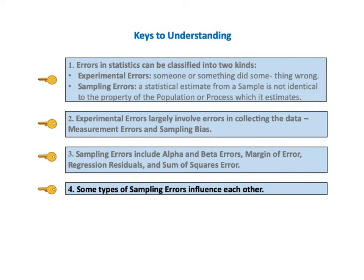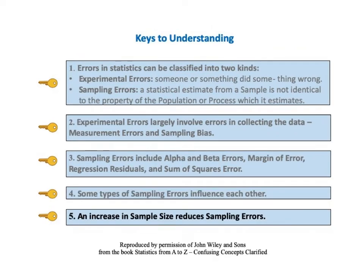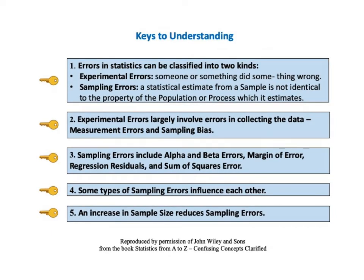Key to understanding number four says some types of sampling errors influence each other. Key to understanding number five says an increase in sample size reduces sampling errors. Here on one page are all five keys to understanding the types, uses, and interrelationships of statistical errors. You may wish to pause the video at this point and read them all together.